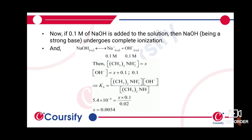For dimethylamine dissociation, we set up the ICE table. The dimethylamine dissociates by amount x, so the OH⁻ concentration becomes 0.1 + x.